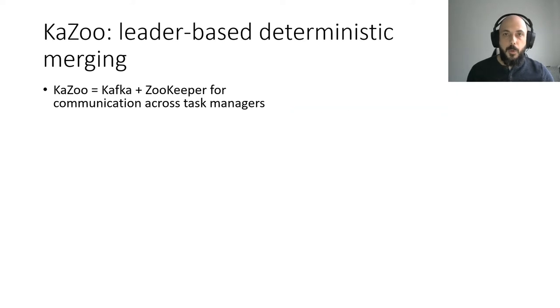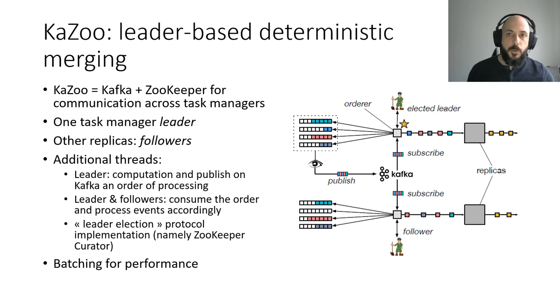To harness this problem, our first algorithm, Kazoo, is leader-based. It means that a replica takes the role of a leader for the computing of the order and communicates to other replicas, followers, the order to follow. Our algorithm is based on the usage of Kafka and Zookeeper, thus giving the two parts of the name. The principle is that a thread on the leader task manager computes an order and publishes to Kafka the order of events. Both leader and followers consume then the results in batch.